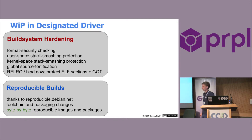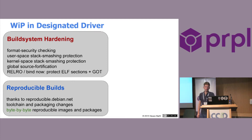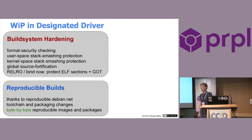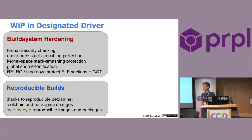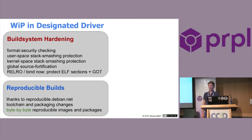What are we currently working on in Designated Driver — which, by the way, is the first release named after a non-alcoholic cocktail? We have some build system hardening; we were lacking behind on this compared to other distributions. What we now enable by default is checking of format security for all our packages that we compile. We added userspace and kernel space stack smashing protection by default now, which will be available in the next release — and if you use trunk, it's already there. We're also using source fortification, usually known by passing -D_FORTIFY_SOURCE.